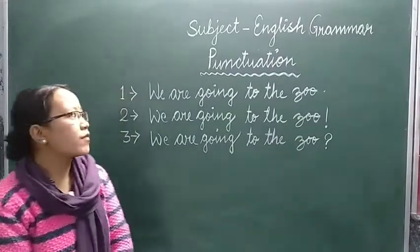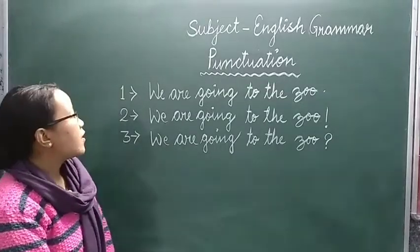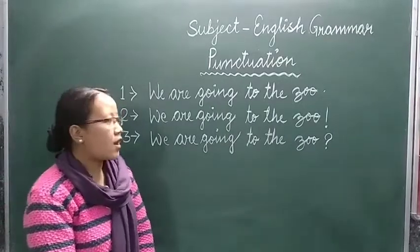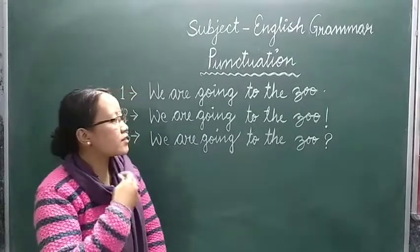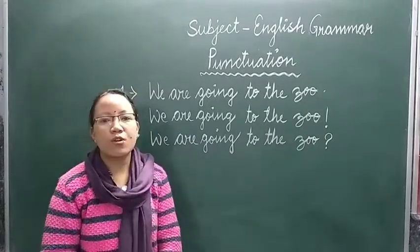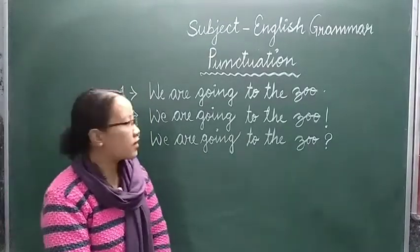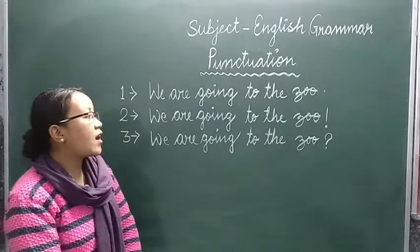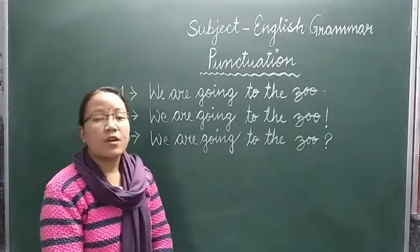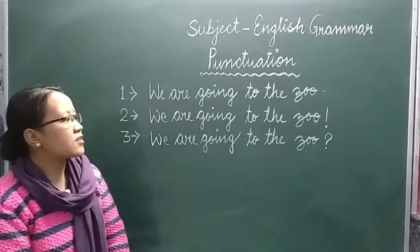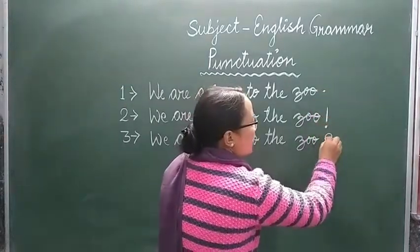So, students, we have three sentences. The first one is: 'We are going to the zoo.' The second is: 'We are going to the zoo?' And the third is: 'We are going to the zoo!' In these three sentences, if you have seen, I have used different punctuation marks.